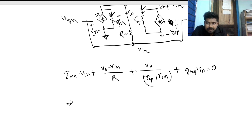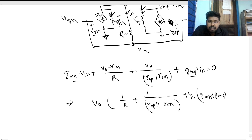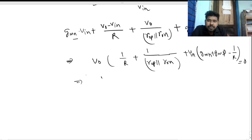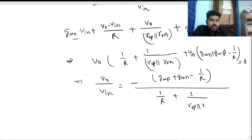Taking Vout common and Vin common, and rearranging, the expression becomes: Vout times (1/r + 1/(rop||ron)) plus Vin times (gmn + gmp minus 1/r) equals zero. Solving for Vout/Vin gives: Av = minus (gmp + gmn minus 1/R) divided by (1/R + 1/(rop||ron)).